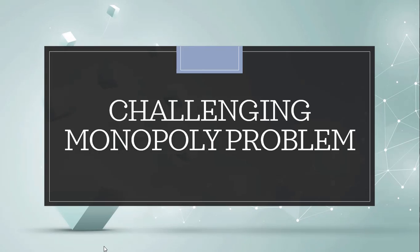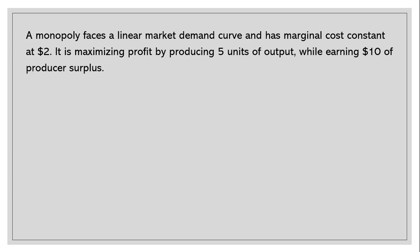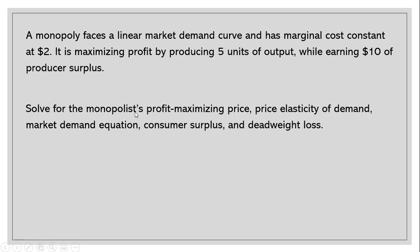Hello, in this video we're going to solve a challenging monopoly problem. A monopoly faces a linear market demand curve and has marginal costs constant at $2. It is maximizing profit by producing 5 units of output while earning $10 of producer surplus. We want to solve for the monopolist's profit maximizing price, price elasticity of demand, market demand equation, consumer surplus, and dead weight loss.